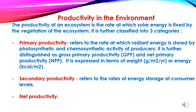The productivity of an ecosystem is the rate at which solar energy is fixed by the vegetation of the ecosystem. It is classified into three categories. First is primary productivity, which refers to the rate at which radiant energy is stored by photosynthetic and chemosynthetic activity of producers, further distinguished as gross primary productivity and net primary productivity, expressed in terms of weight or energy. Second is secondary productivity, which refers to the rate of energy storage at consumer level. Third is net productivity.